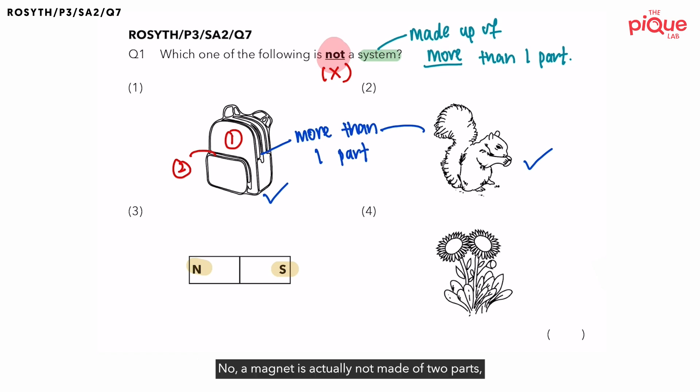No! Magnet is actually not made of two parts, but instead, it is only made up of one part. Why is that so? Magnet is made of magnetic material. So actually, this entire piece of the magnet is made up of one piece of a magnetic material that has already been magnetized. So if it is just one piece of magnetic material, it is considered as only one part.